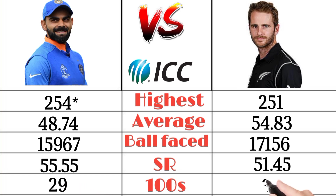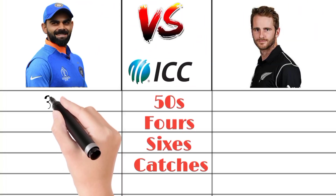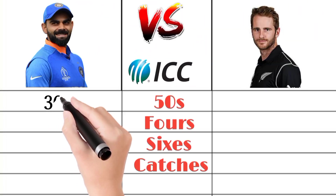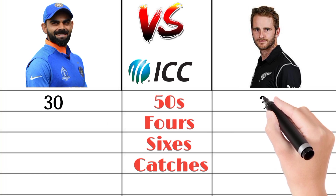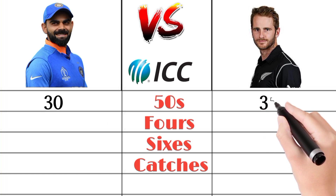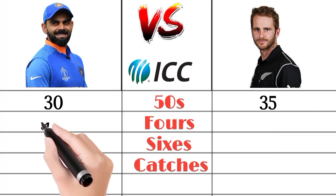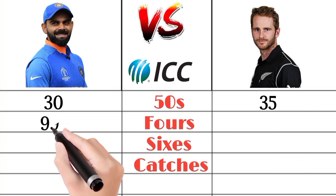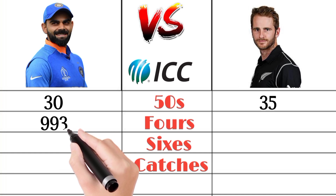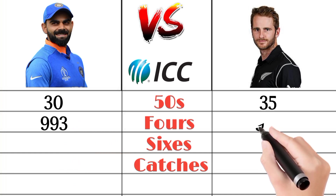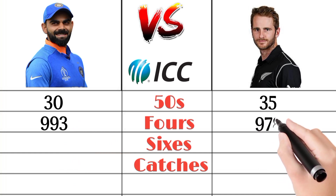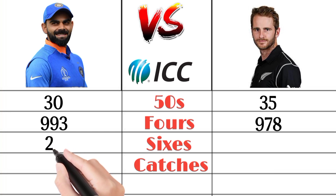Virat Kohli scored 2900 runs in a certain category in test cricket and Kane Williamson 3200. Virat Kohli scored 3050 and Kane Williamson 3550 in another test category. Virat Kohli's rating is 993 and Kane Williamson's is 978 in test cricket. Virat Kohli's figure is 26.6 and Kane Williamson's is also 26.6 in test cricket.